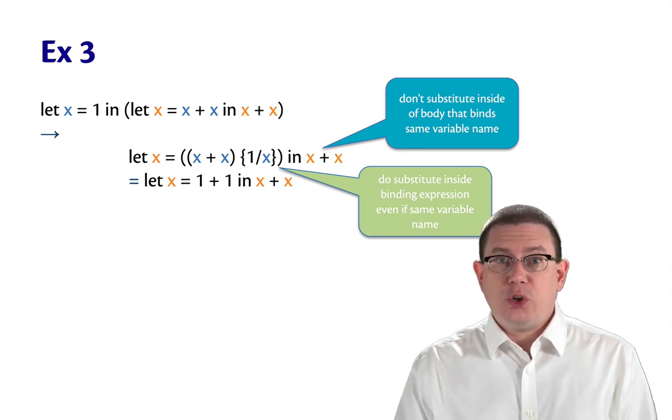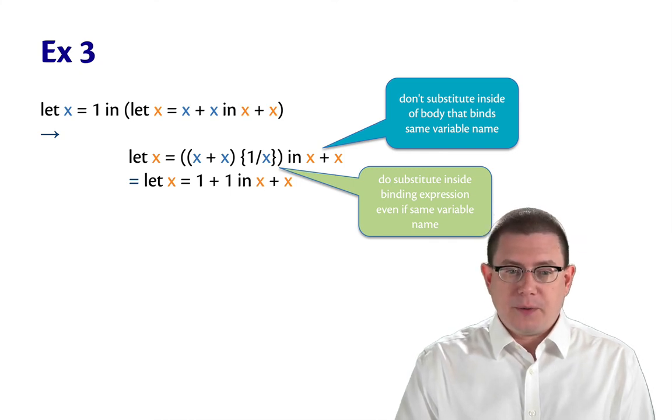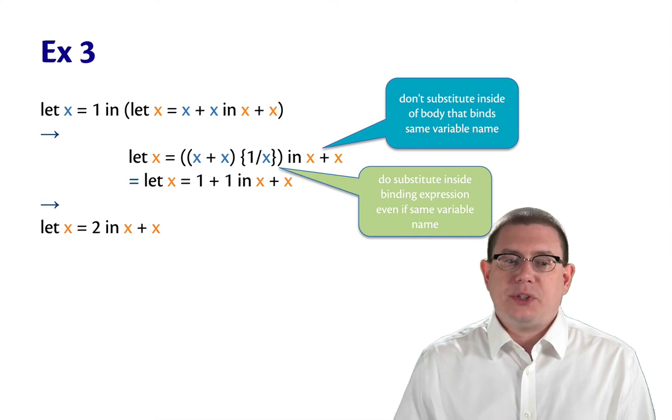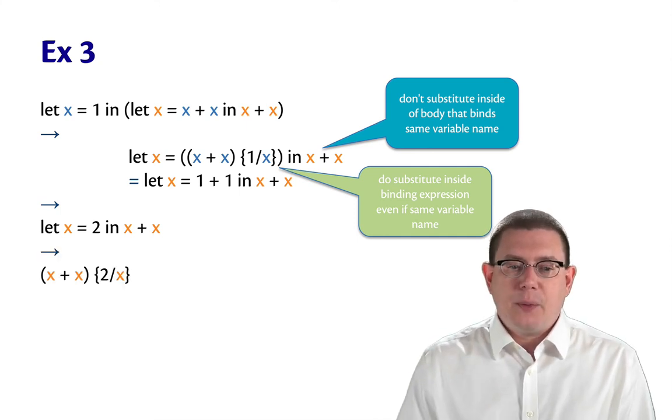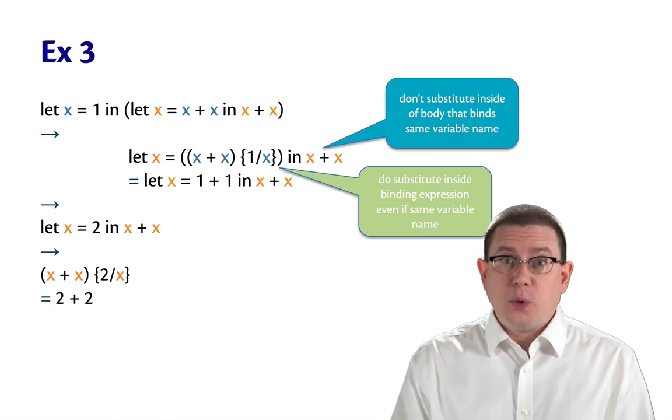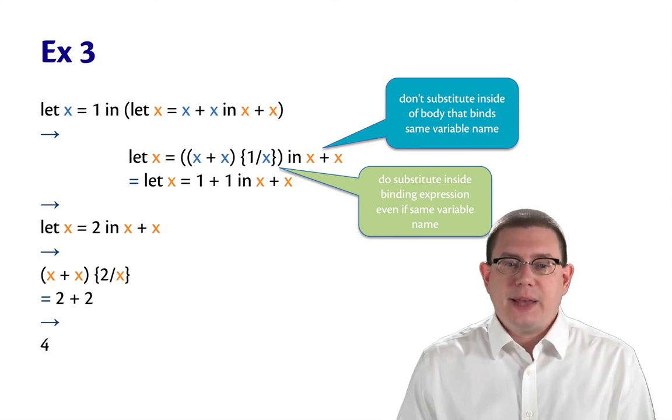The rest of this is pretty easy to work out, given everything we've done so far. The let x equal 1 plus 1 in x plus x will step to let x equal 2 in x plus x. That will step to x plus x with 2 substituted for x. And that will be equal to 2 plus 2. And finally, that steps to 4.